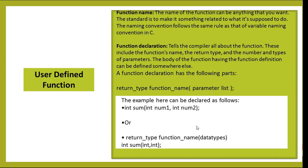The second part is function declaration. Function declaration tells the compiler all about the function — the function name, the return type, and the number and type of parameters. The body of the function having the function definition can be defined somewhere else. Function declaration is also known as function prototype. The syntax for function declaration is: return type, function name, then parameter list.